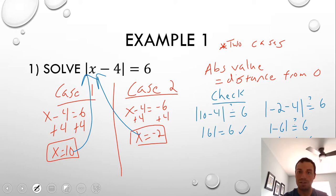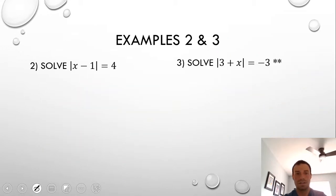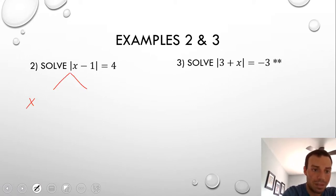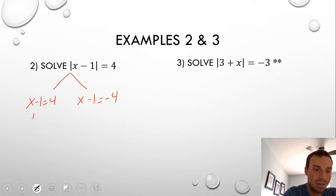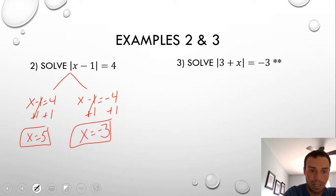Remember: two cases when dealing with absolute value equations. On your second case, make the right side negative. For example 3, we have the absolute value of x minus 1 equals 4. Case 1: x minus 1 equals 4, giving x equals 5. Case 2: x minus 1 equals negative 4, giving x equals negative 3. Those are our two solutions.